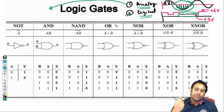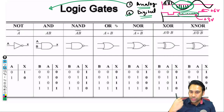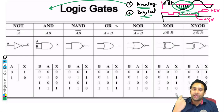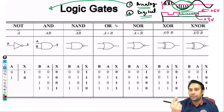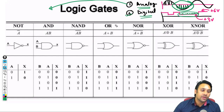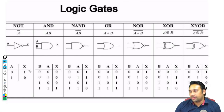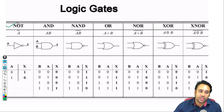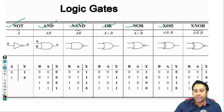अब हमने identify किया कि हमारे computer में we should use digital signal — analog signal को use नहीं करना चाहिए, क्योंकि digital signal में distortion कम होगा. अब अगर हमने digital signal को use करना है, तो हम उसके ऊपर logics define करेंगे — अलग-अलग चीज़ें perform करने के लिए हमने कुछ logic gates का invention किया, जैसे NOT, AND, NAND, OR, NOR, XOR, और XNOR.